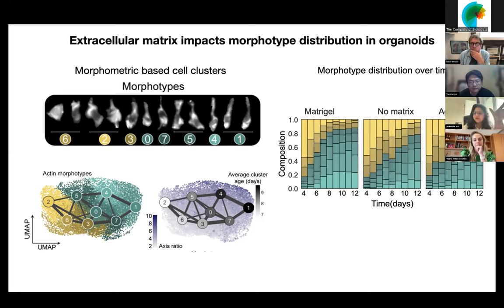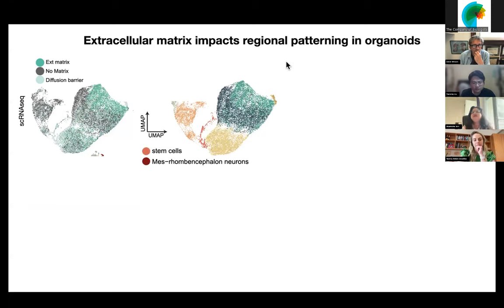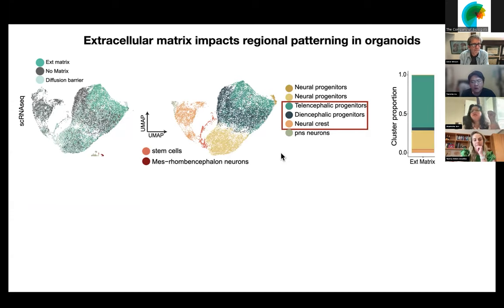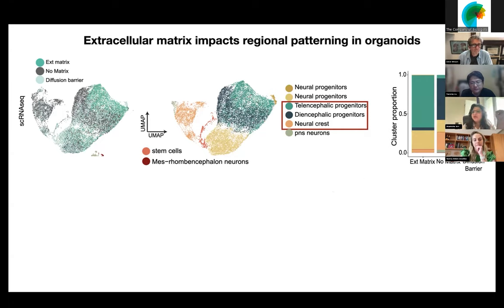This made us ask what is really happening at the organoid patterning level — what are these cells, and what are the yellow cells that are persisting? To answer this, at the end of imaging we did single-cell RNA-seq to classify the different cell types emerging across the three conditions. We found that when Matrigel is provided externally, not only are the polarities and morphologies different, but these organoids are largely forming telencephalic progenitors. When we don't have it, a lot of diencephalic progenitors and neural crest cells start coming up.